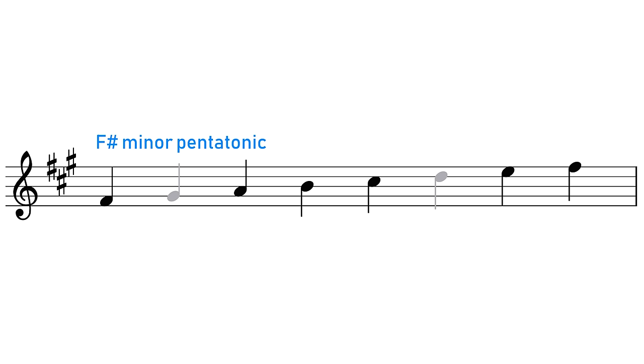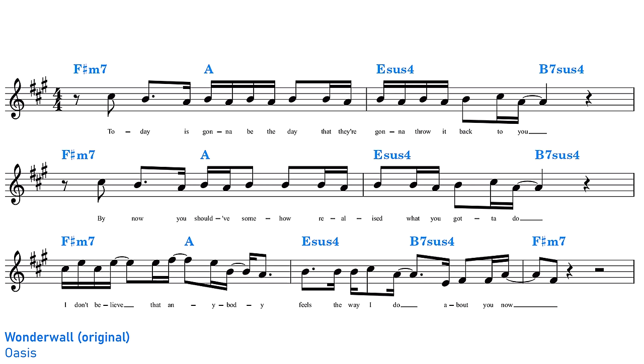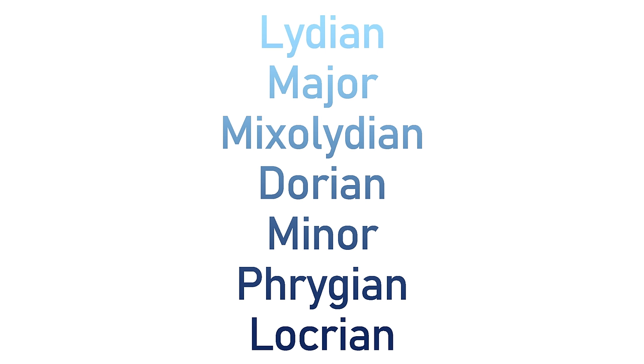The pentatonic scale is a simplified version of the minor scale which only has five notes. It leaves out the second degree and the sixth degree. What this means is that although we know that Wonderwall is in the minor key, it hasn't been committed to any particular minor scale.